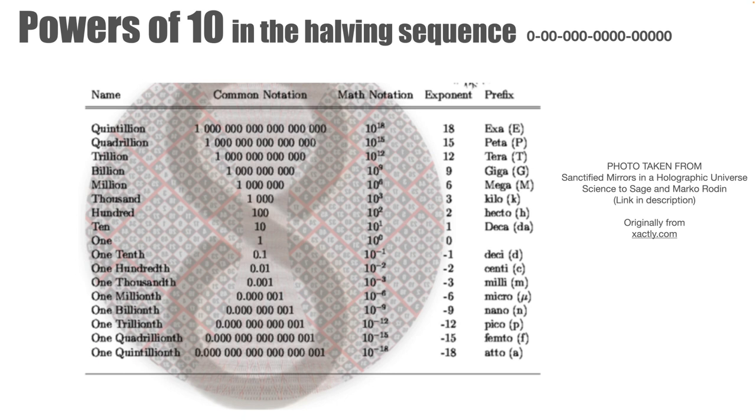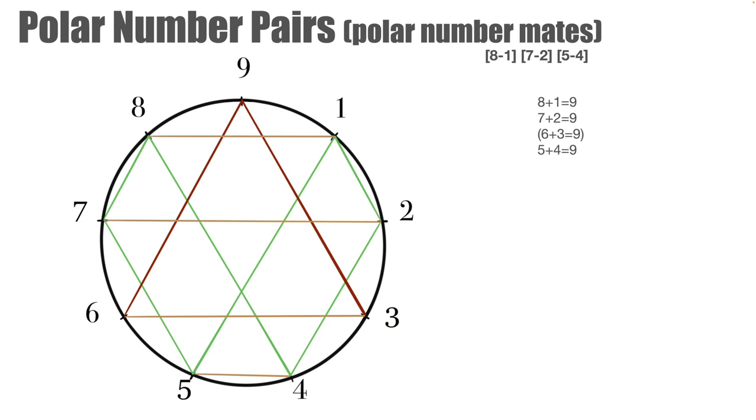This is obviously fundamental to both VBM and also the ABJAD numerical system in mathematics, as just pictured here. The next pattern we're going to observe in the cipher is that of the polar number pairs. This becomes very important later on. Alternatively called the polar number mates, they are 8 and 1, 7 and 2, and 5 and 4.